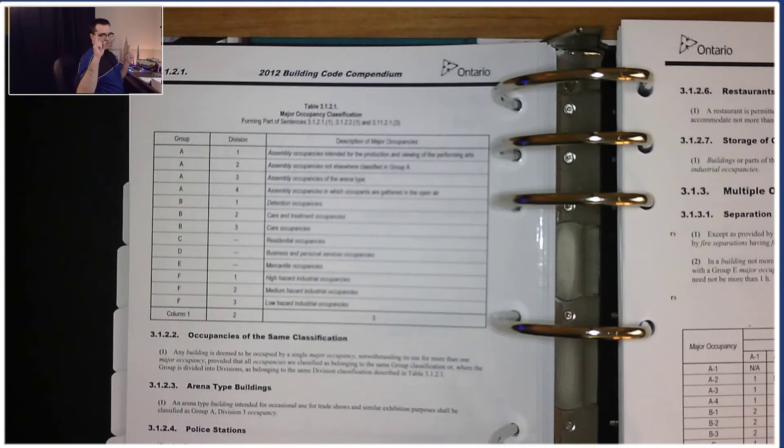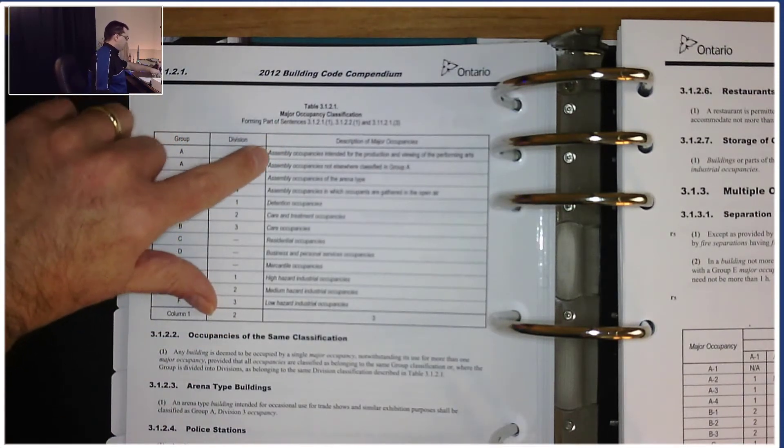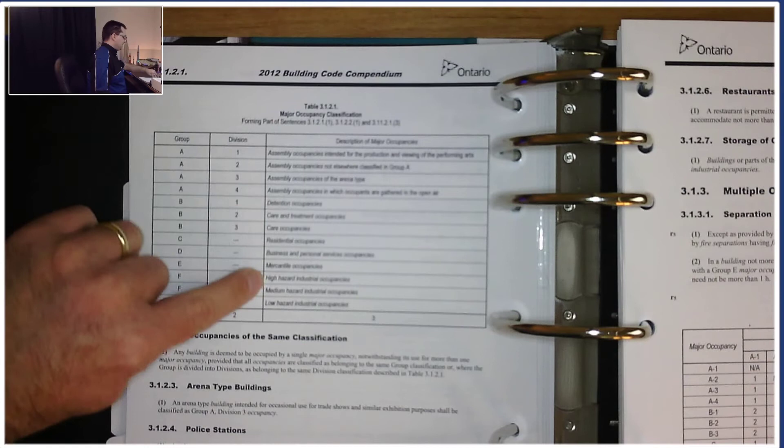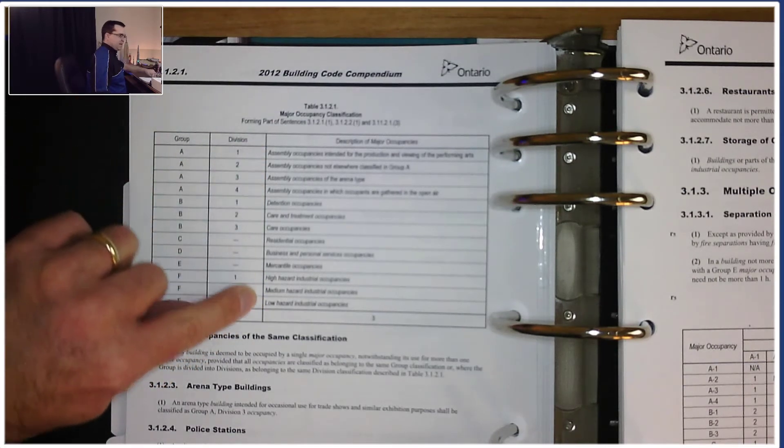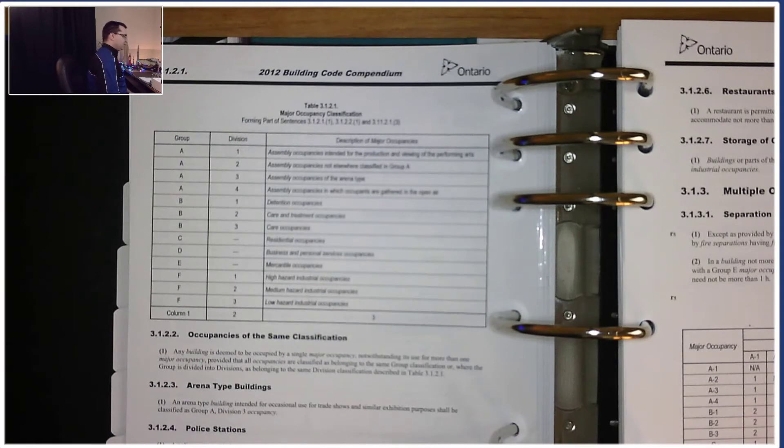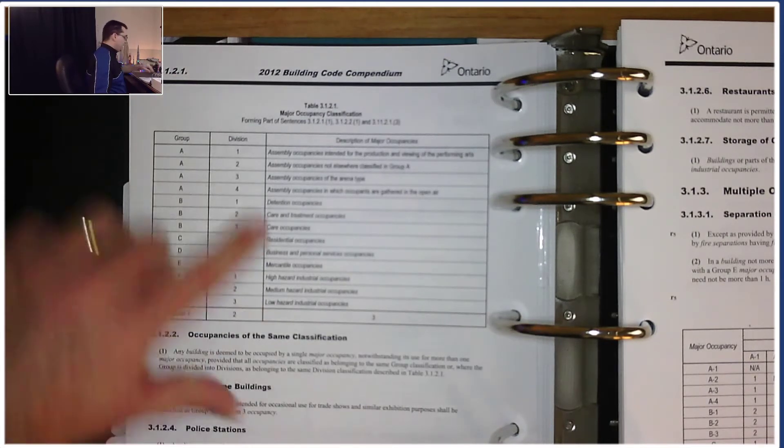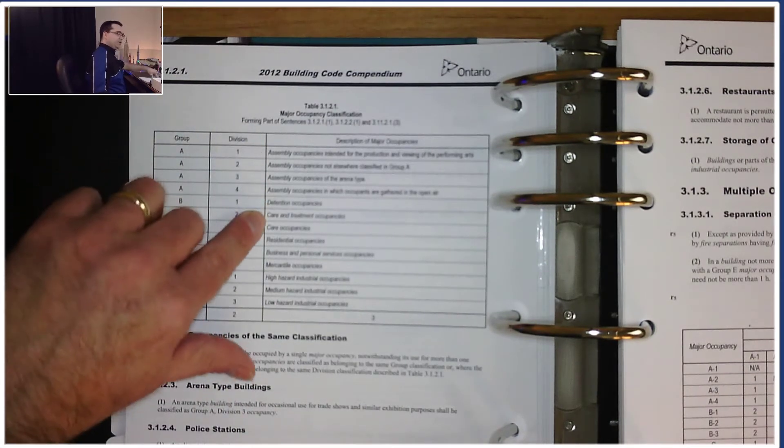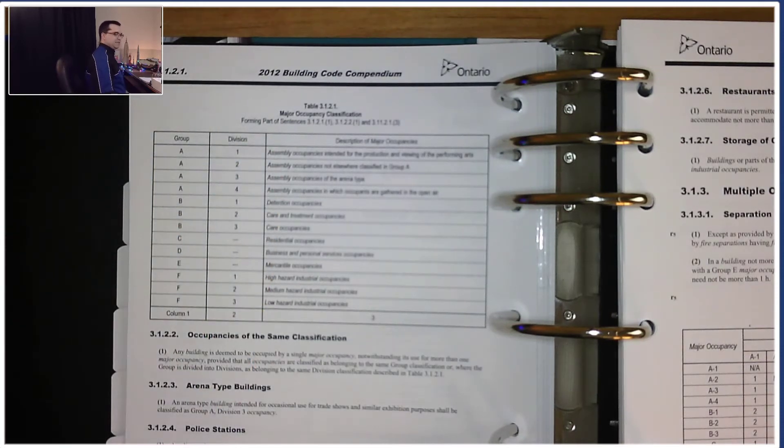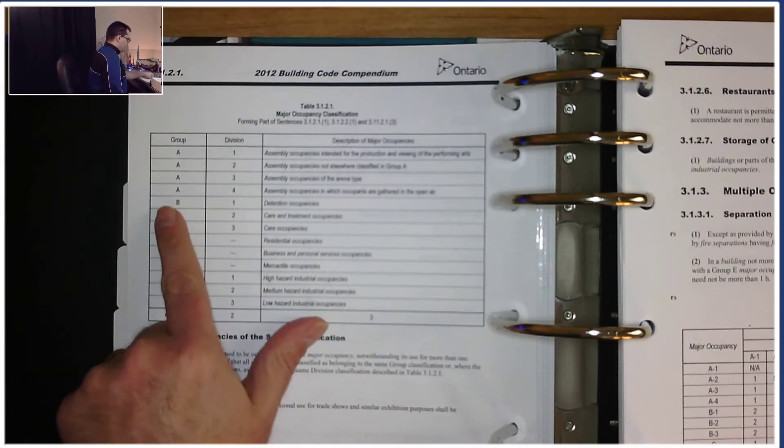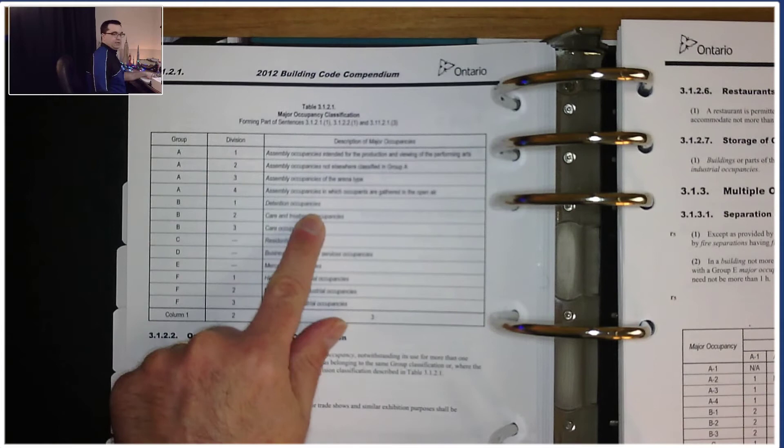I want to remind you of something - here's a tip. You see how these words are italicized? That means those words can be found under Division A. There are certain words that are defined under the definitions in Division A in Volume 1. We came across that it looks like police stations is B1, detention occupancies.